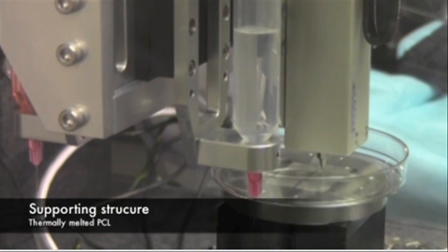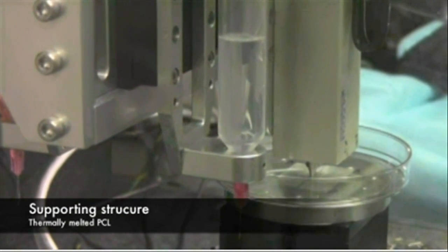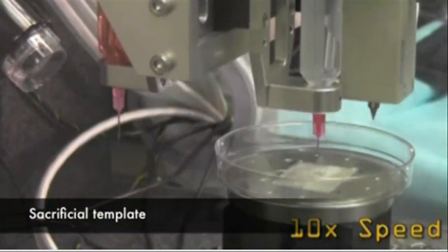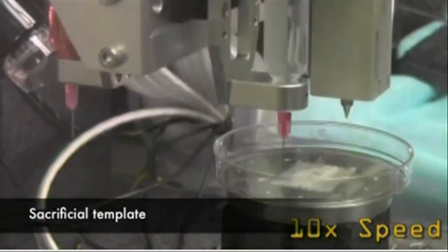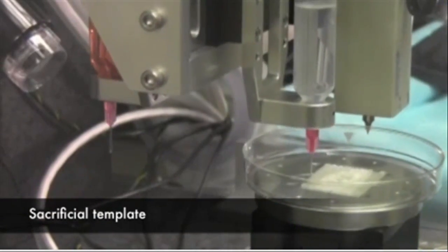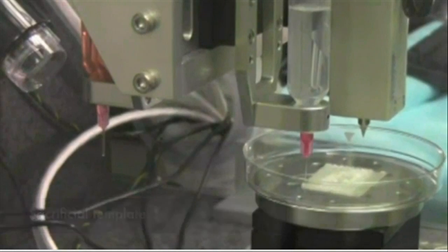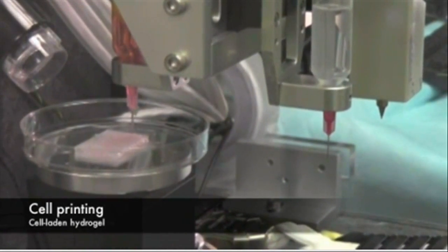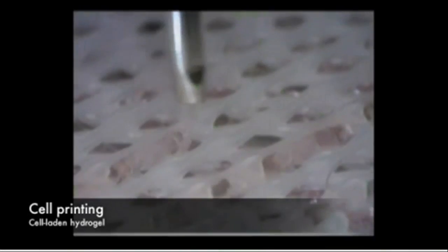A major challenge of tissue engineering is ensuring that implanted structures live long enough to integrate with the body. The Wake Forest Baptist scientists addressed this in two ways. They optimized the water-based ink that holds the cells so that it promotes cell health and growth, and they printed a lattice of micro-channels throughout the structures.